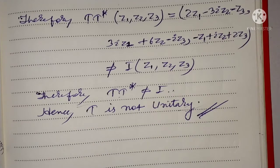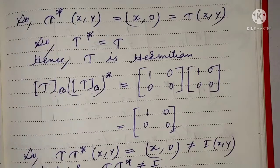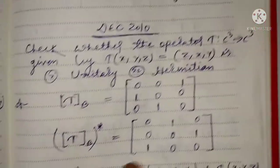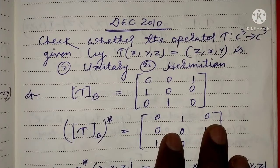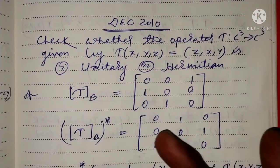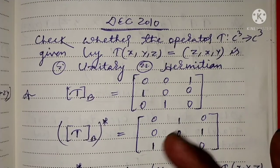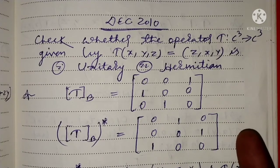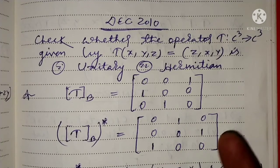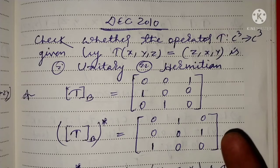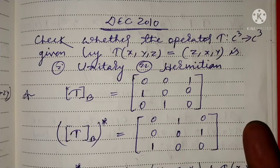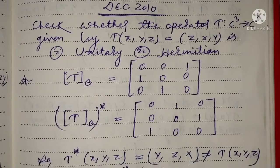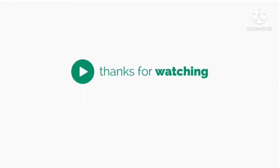Okay friends, in this way we have covered linear operators — checking for unitary, Hermitian, and self-adjoint properties. Thanks for watching. Bye bye.